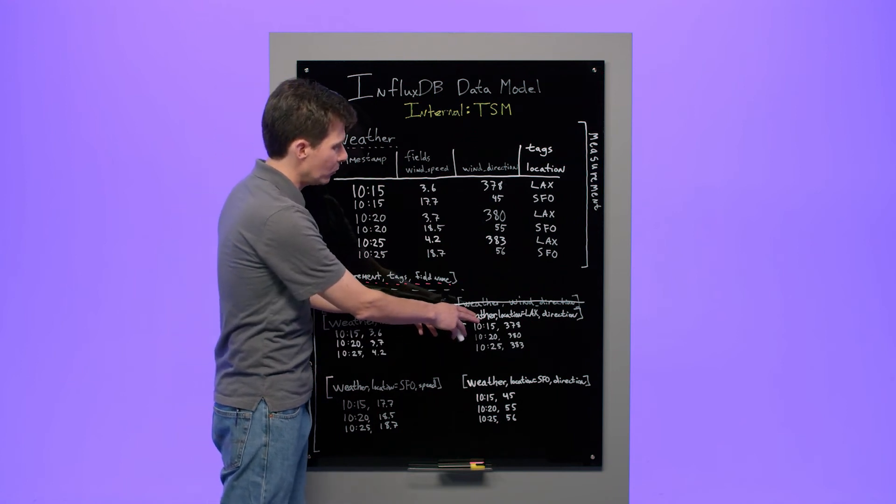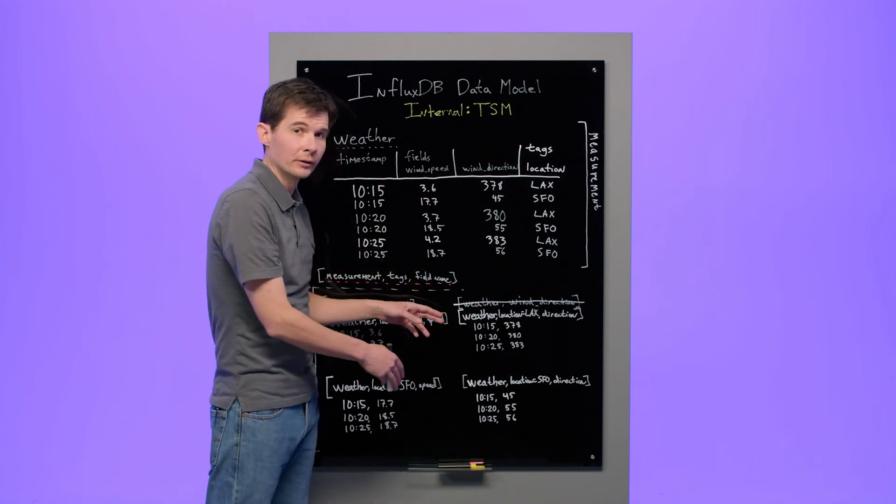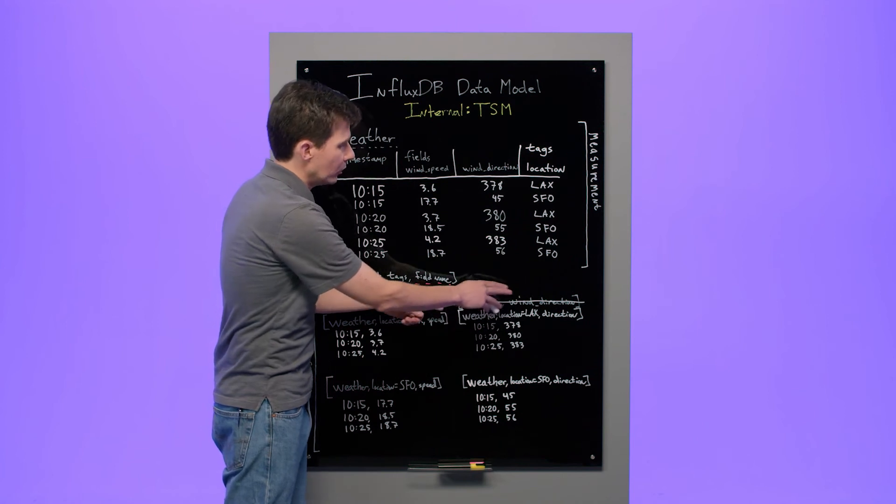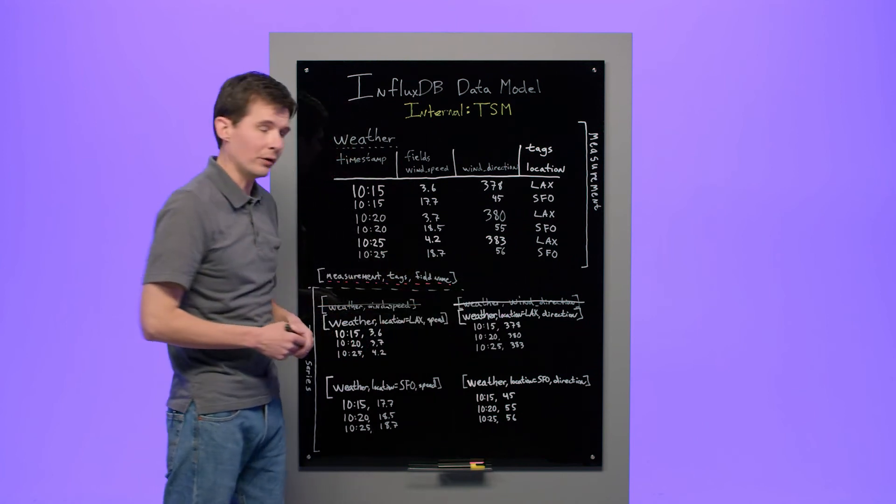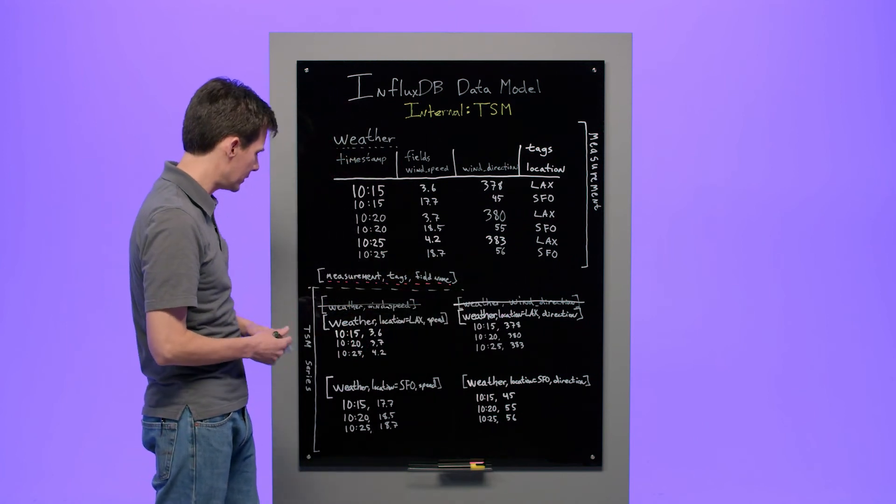Similarly, this series key was weather wind direction, and now it's weather location LAX and then wind direction. But the data is the same.